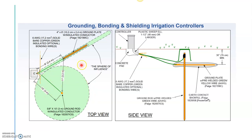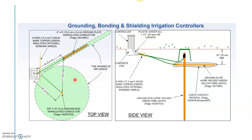Similarly, the ground plate must be installed at least 8 feet away from the controller, as the influence of electron movement extends up to 8 feet. The ground plate dimensions are 4 inches wide by 8 feet long. As discussed, 6 AWG solid copper wire is required because there should be no resistance inside the wire — otherwise electrons will not choose that path and will circulate within the controller itself. I hope you've understood the concept behind proper grounding installation for irrigation controllers.